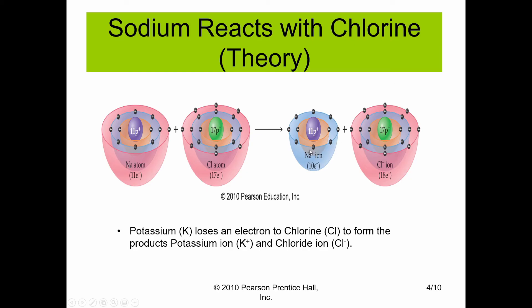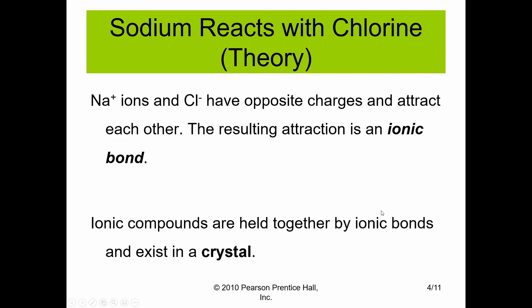Any atom or element that loses an electron will gain a positive charge. The chlorine has gained an electron and gained a negative charge, so it becomes chlorine minus. Any atom that gains an electron will hold a negative charge. This results in two species that are oppositely charged — one with a positive charge, one with a negative charge — both of which have a full octet. The charges will hold these two atoms close together. The sodium and chlorine ions have opposite charges and attract each other, resulting in an ionic bond.